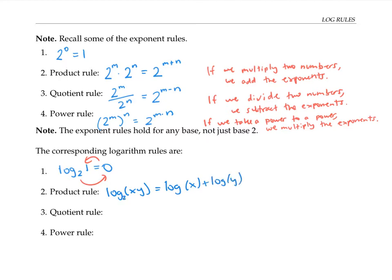I'll make these base two to agree with the base I'm using for my exponent rules. In words, this says the log of the product is the sum of the logs. Since logs really represent exponents, this is saying that when you multiply two numbers together, you add their exponents, which is just what we said for the exponent version.